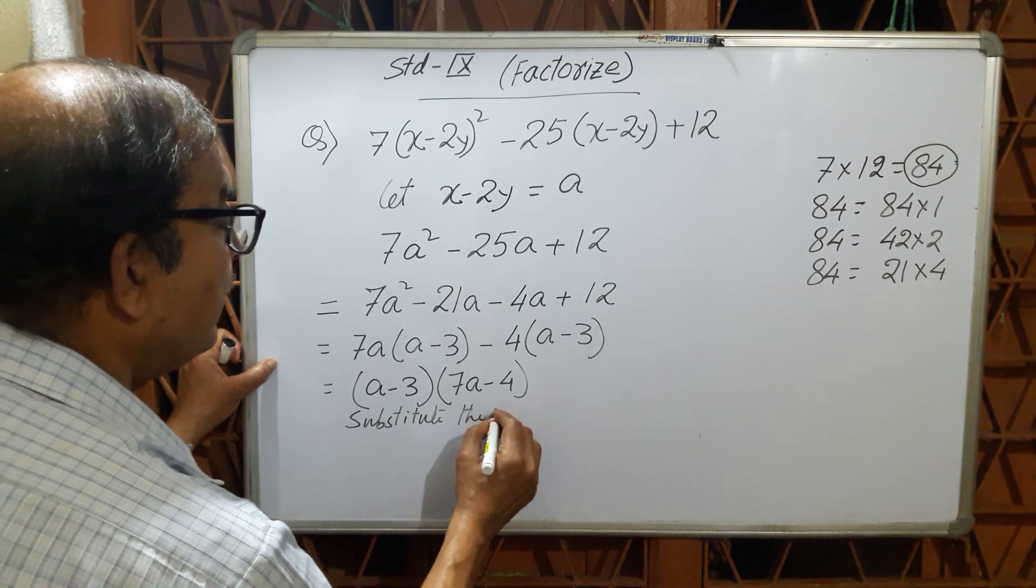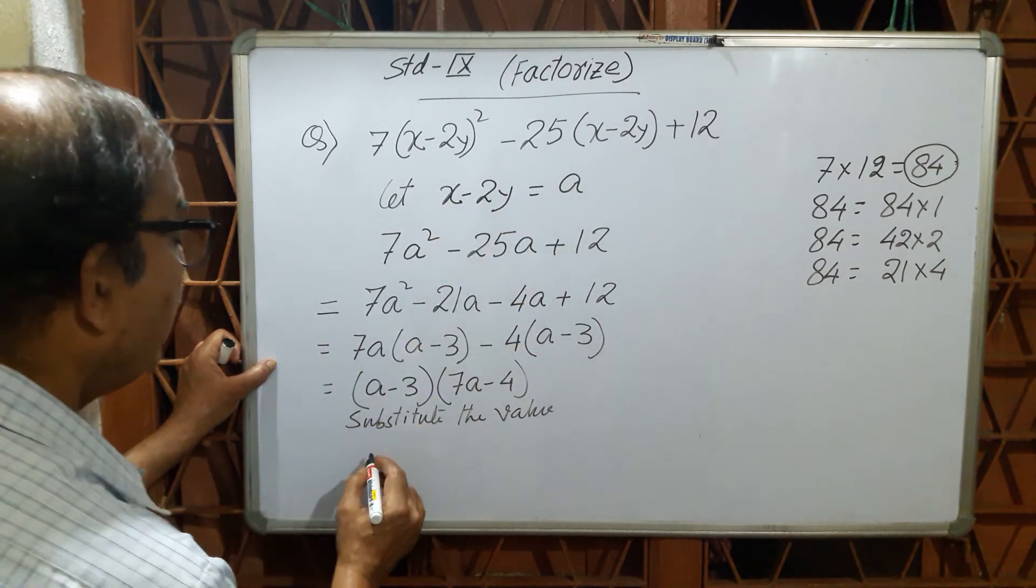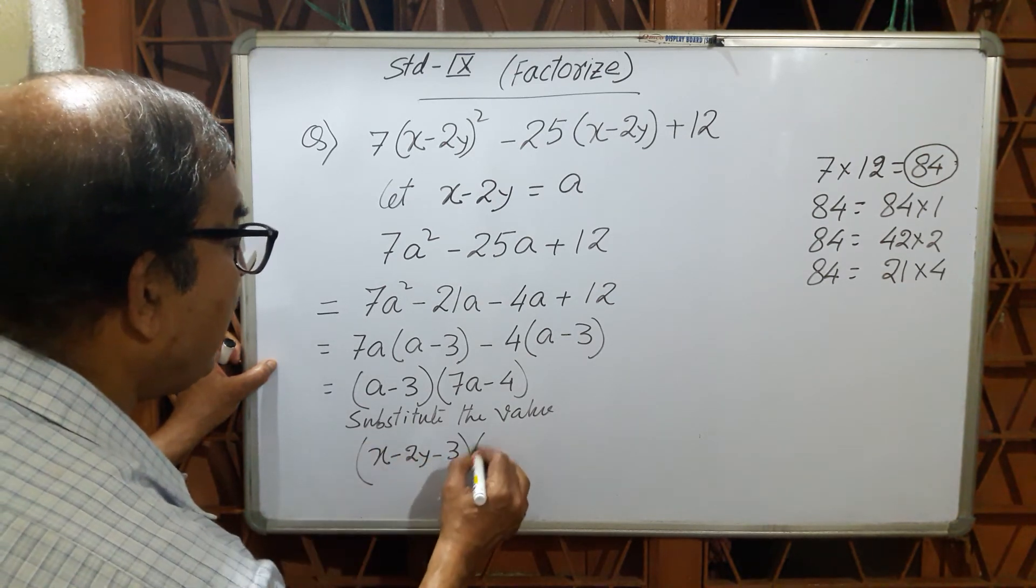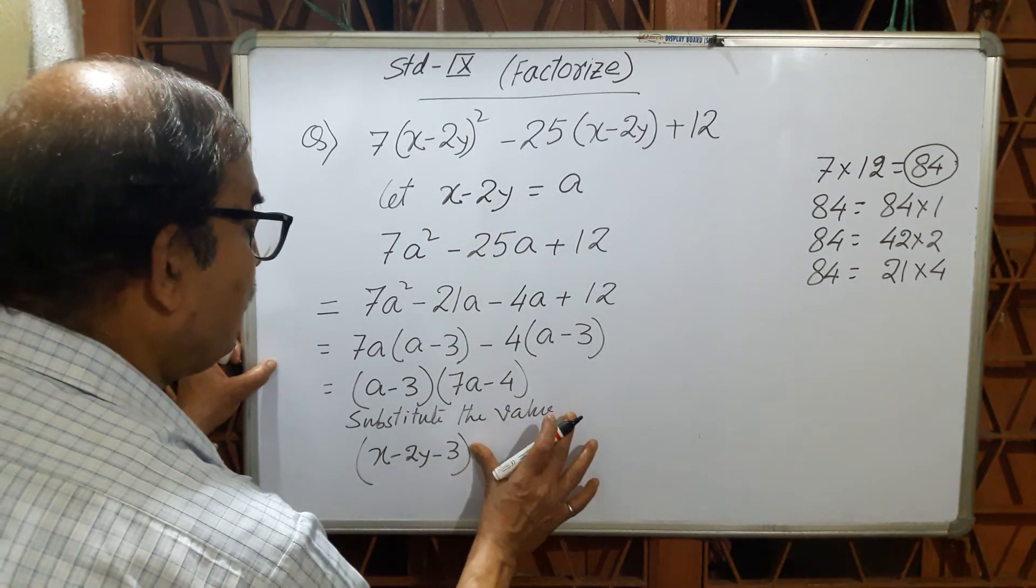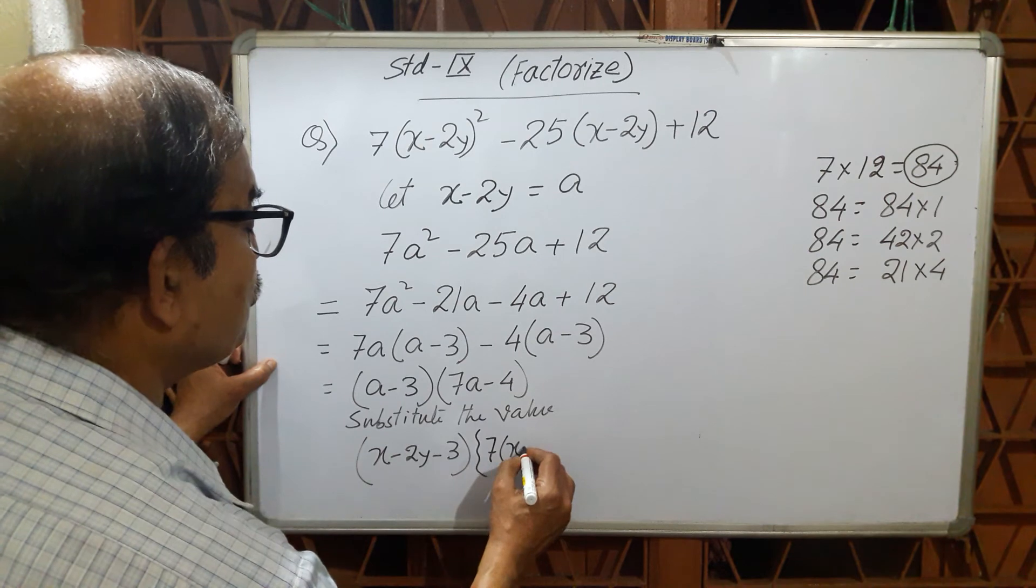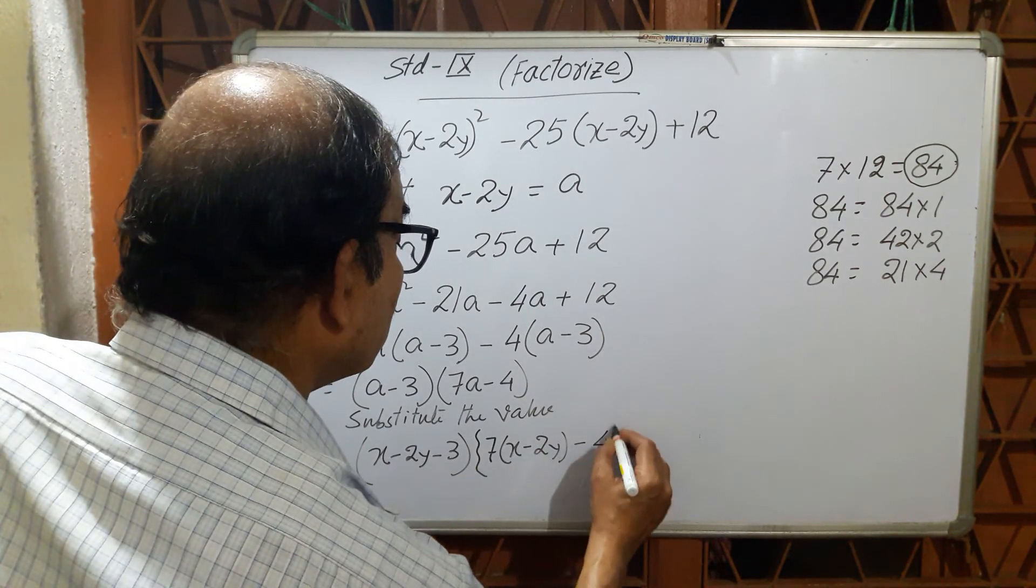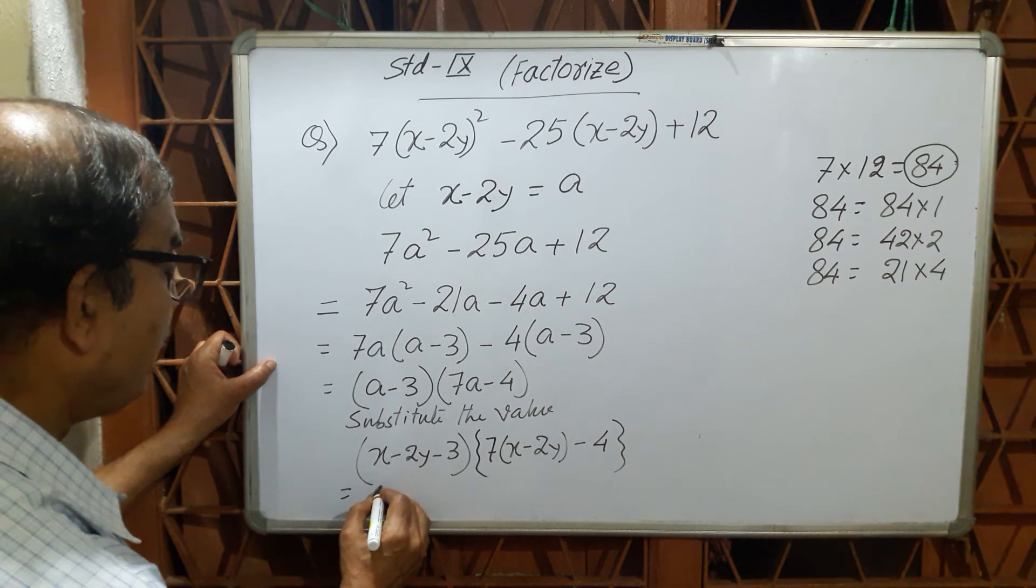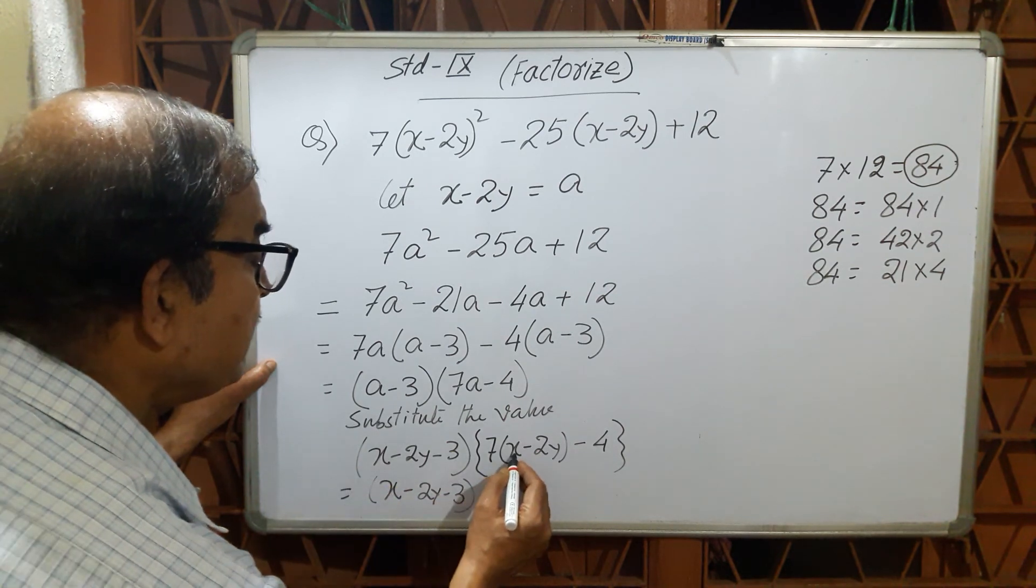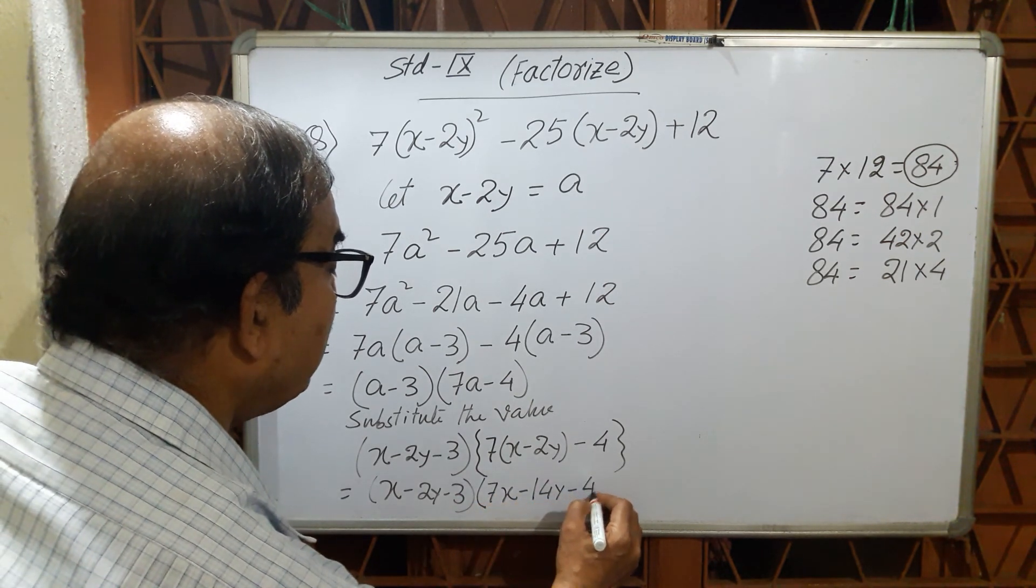Then you put the value of a in the first bracket: x minus 2y minus 3. And in the second bracket you write 7 into x minus 2y, then minus 4. So the answer is (x - 2y - 3) and (7x - 14y - 4).